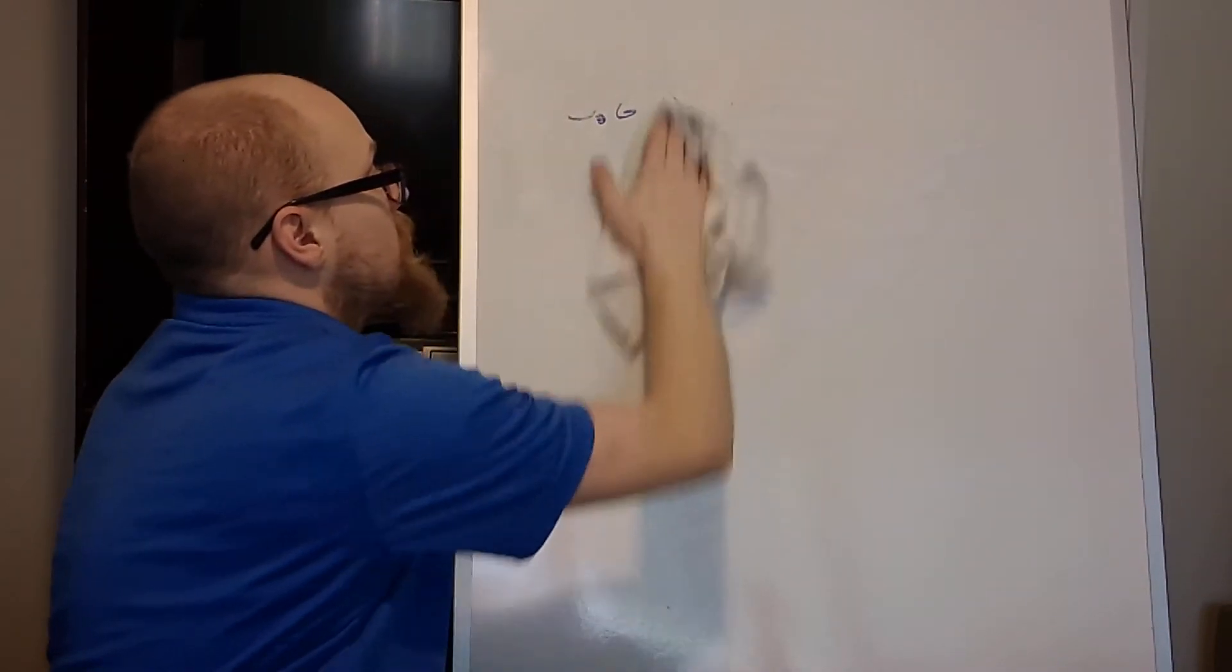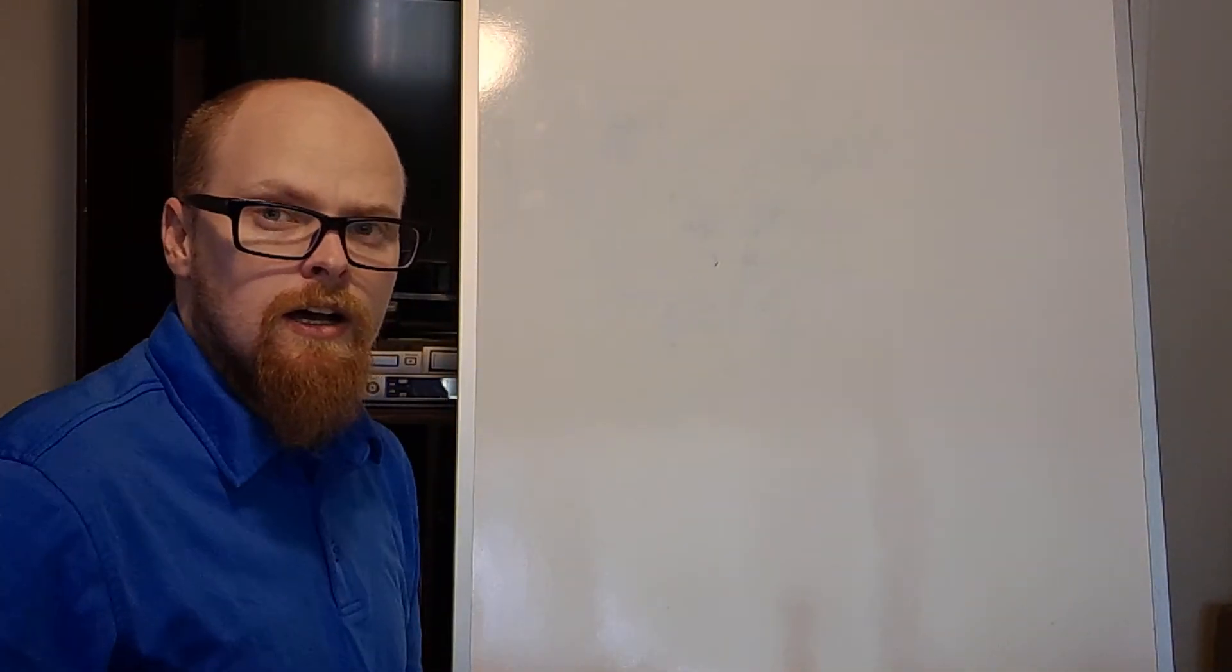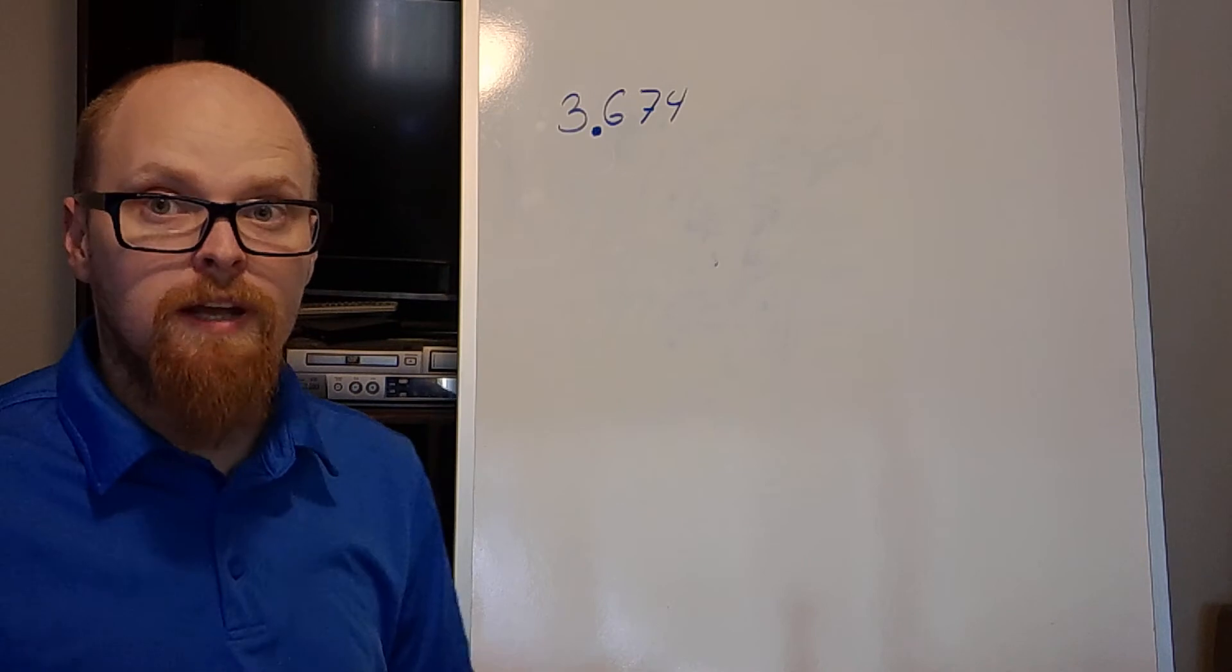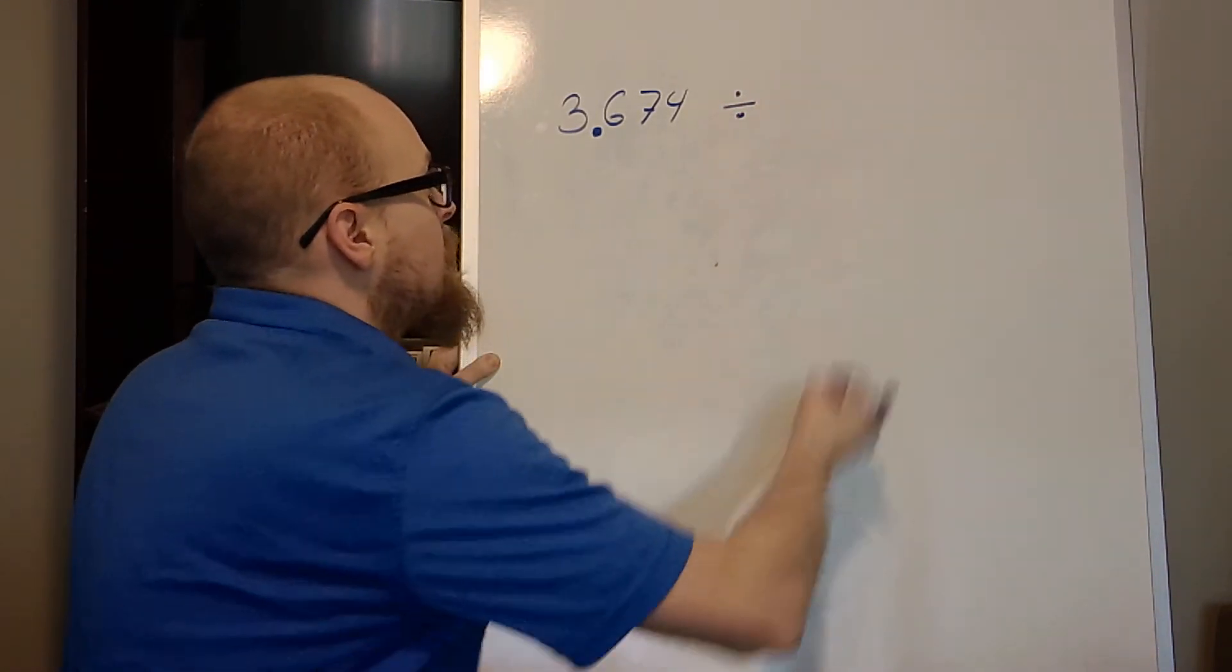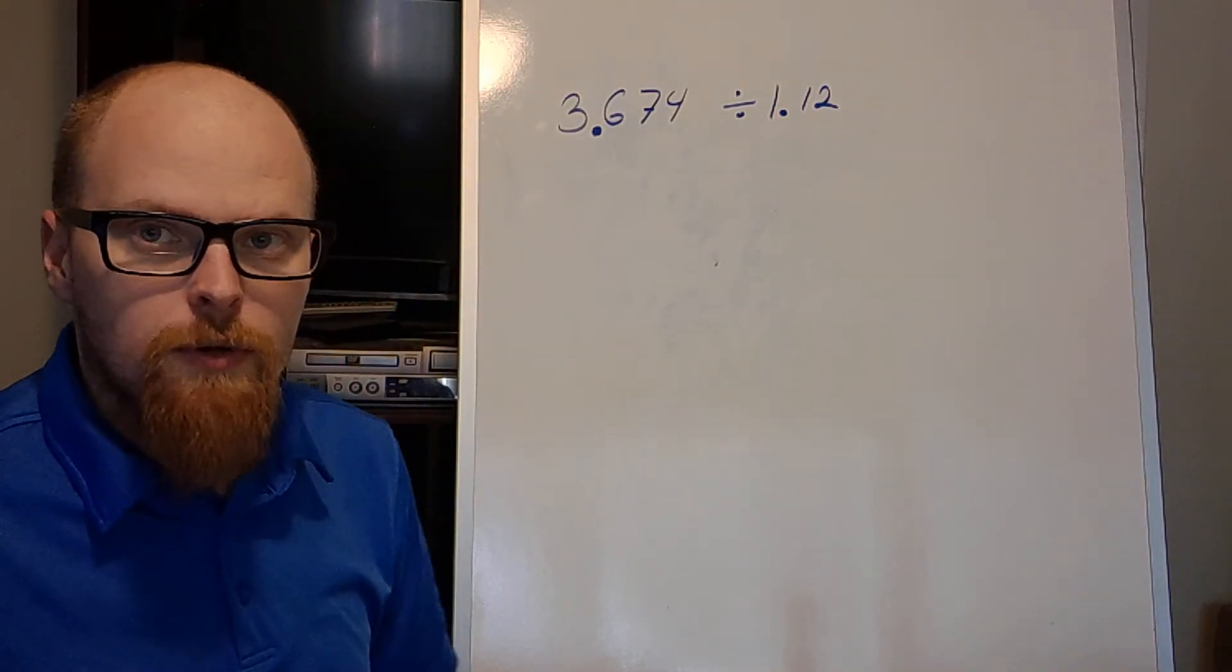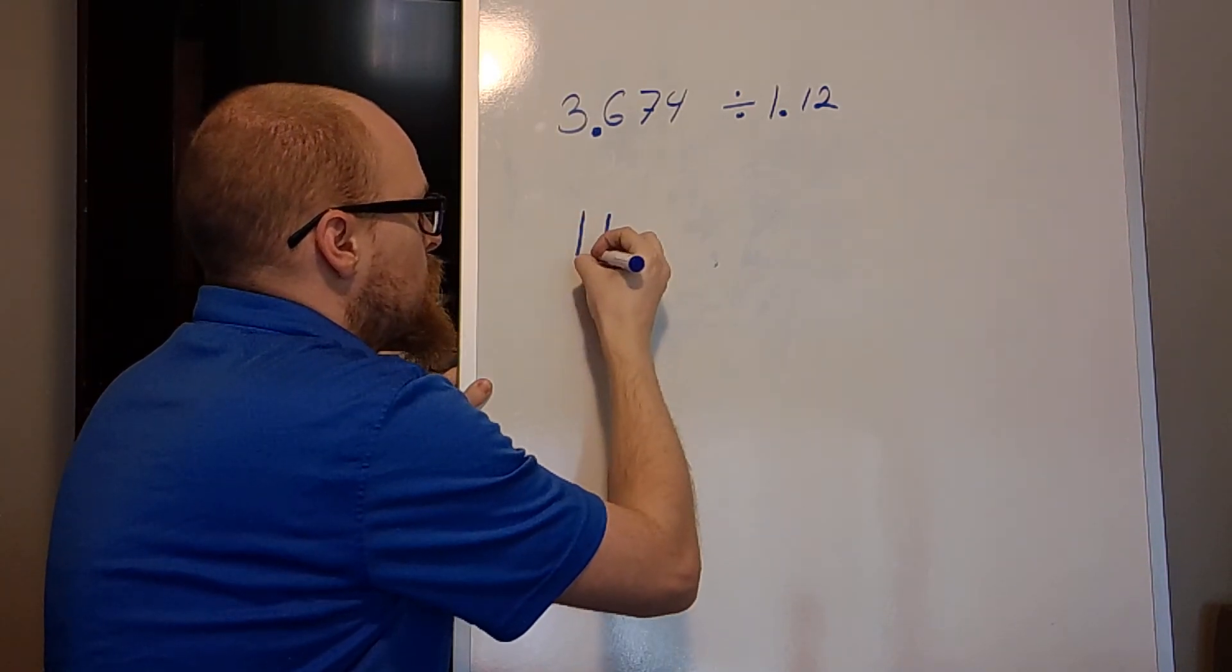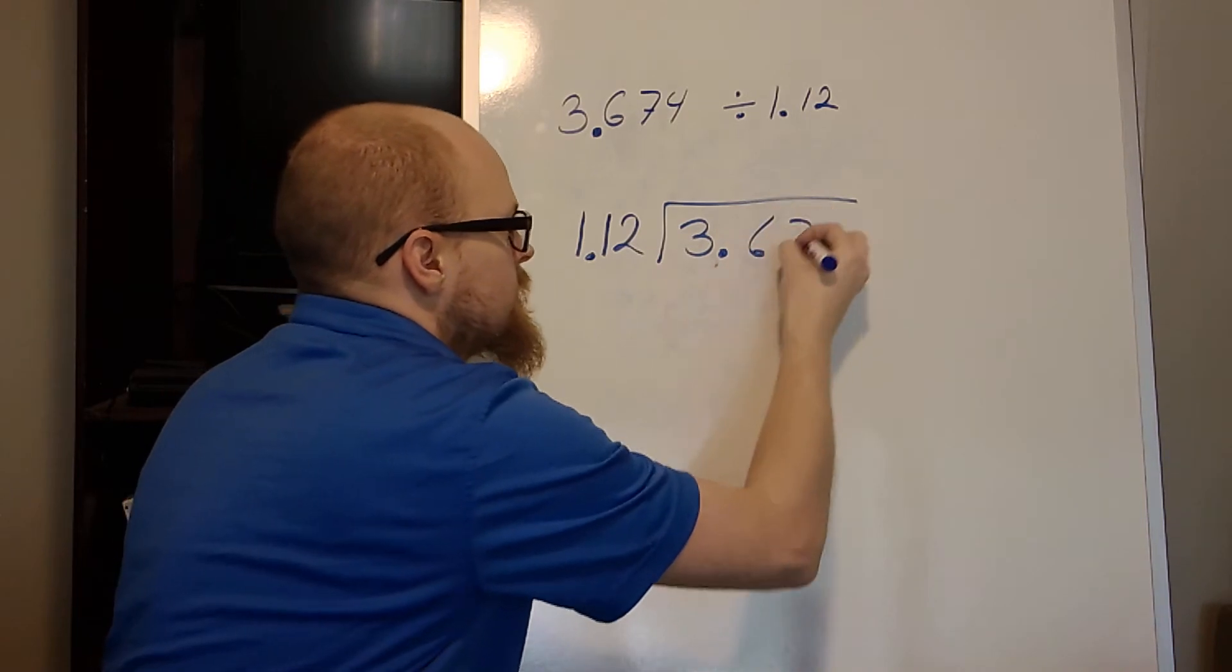So let me rewrite a new equation up here so we have an example of numbers to use. Let's use, how about 3.674. That's a big number, or long number rather. And then we will divide that by 1.12. So again, I have 3.674 and I'm dividing it by 1.12. So I write it out long division form. Dividing 1.12 into 3.674.